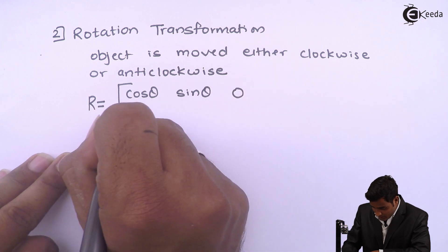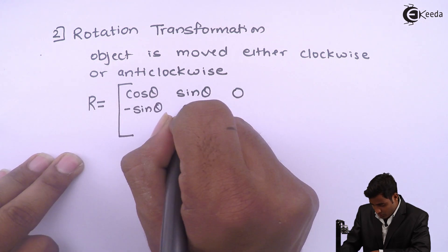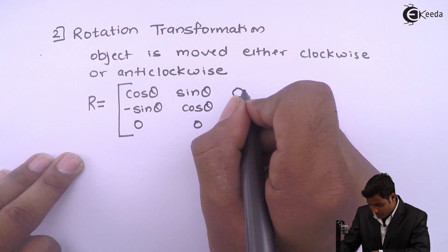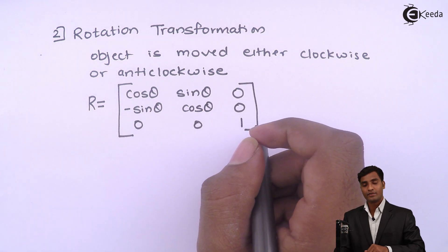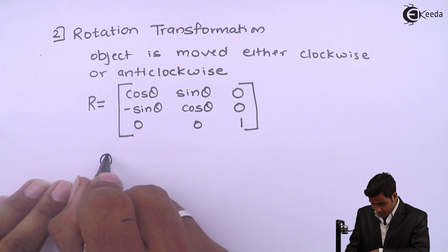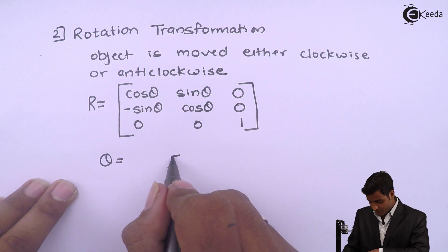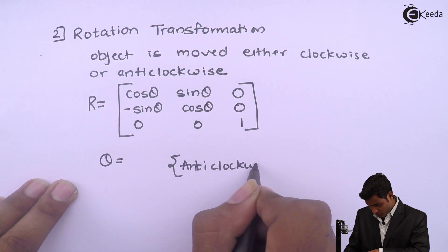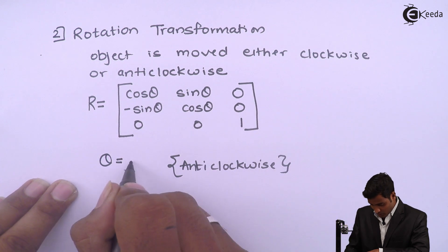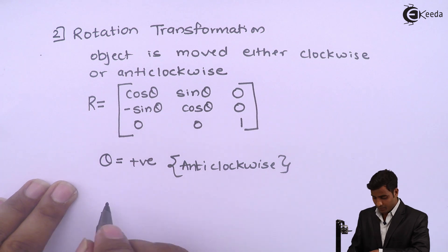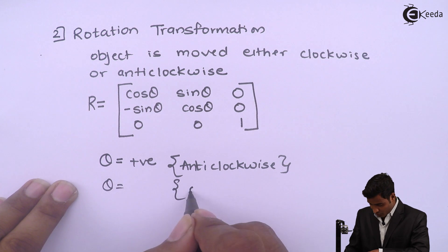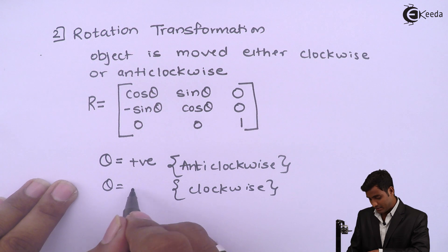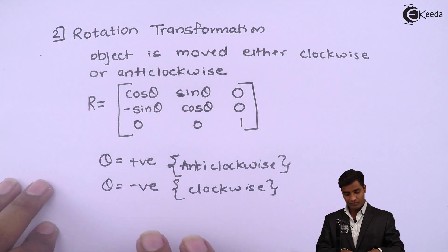And now sign convention for theta for anti-clockwise direction the sign is positive. For clockwise direction the sign of theta is negative.